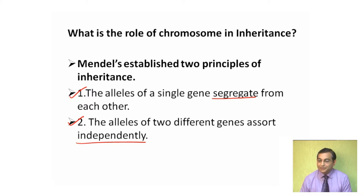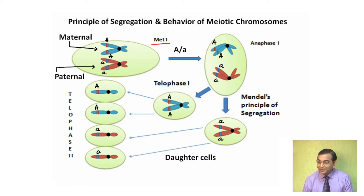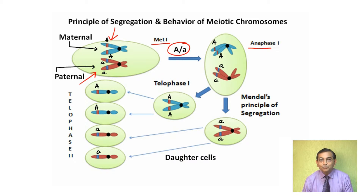Let me explain the principle of segregation and behavior of meiotic chromosomes, as shown in this figure. At the first metaphase of meiotic division one, the maternal chromosome is homozygous for the capital A allele, and the paternal chromosome is homozygous for the small a allele. So the offspring is heterozygous, capital A by small a. At the first anaphase of the first meiotic division, the two chromosomes segregate.